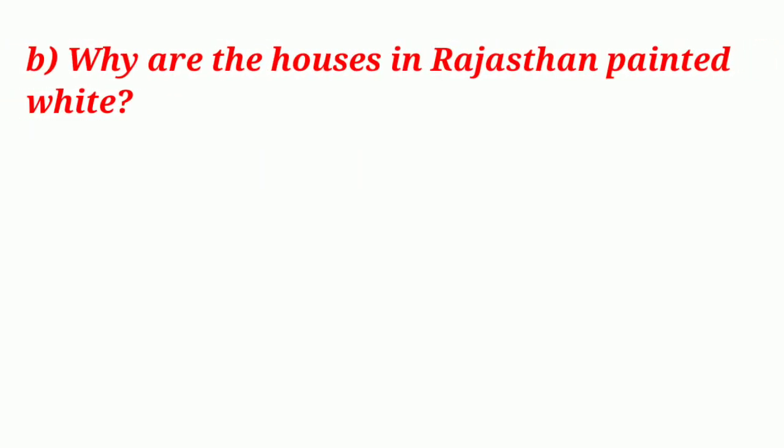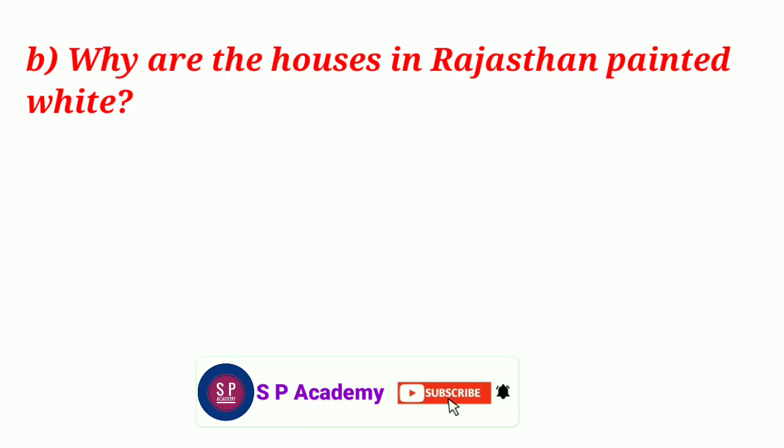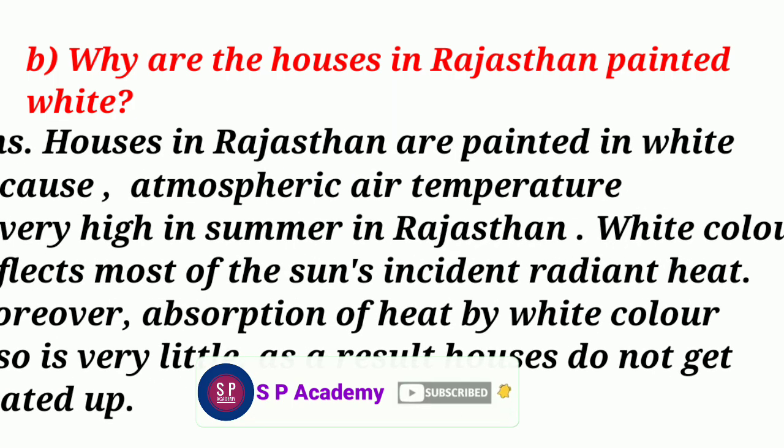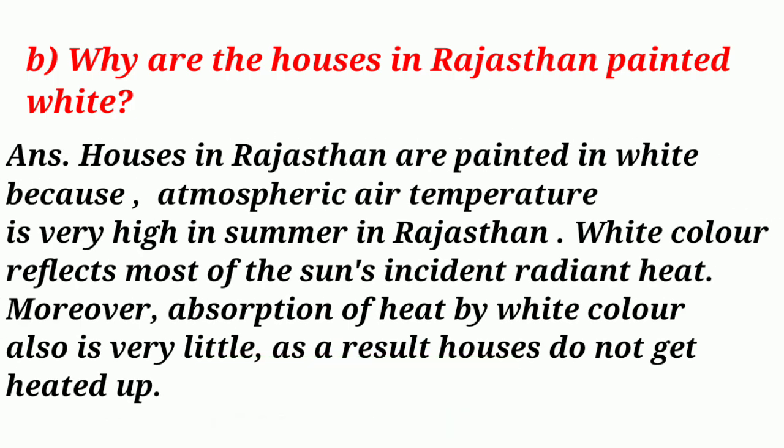Question B: Why are the houses in Rajasthan painted white? Answer: Houses in Rajasthan are painted white because atmospheric air temperature is very high in summer in Rajasthan. White color reflects most of the sun's incident radiant heat. Moreover, absorption of heat by white color is very little. As a result, houses do not get heated up.